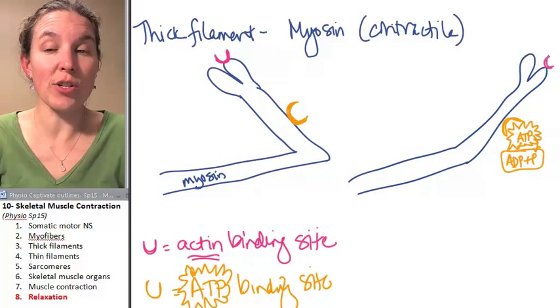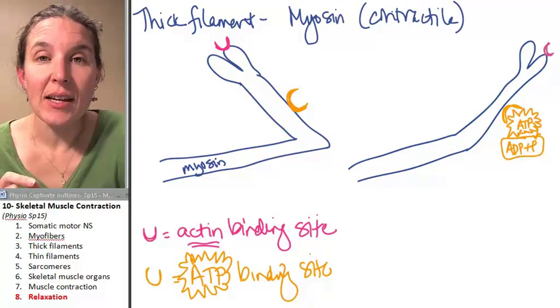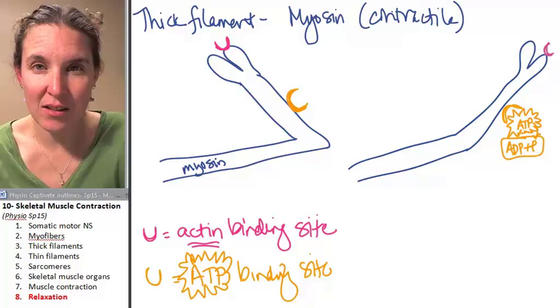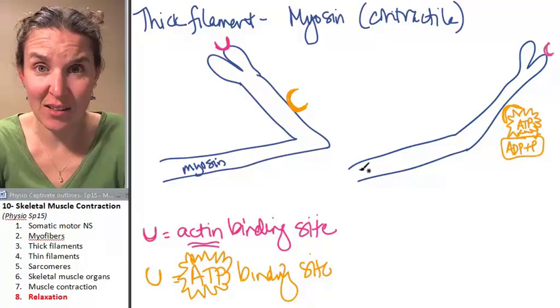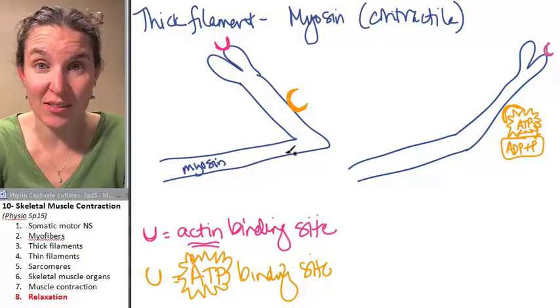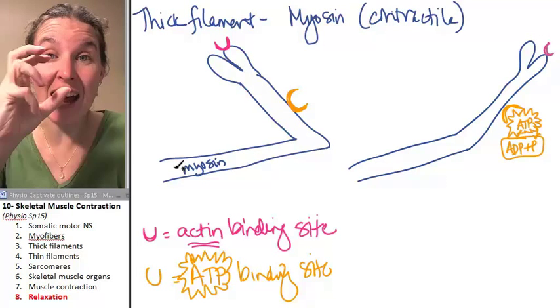Now, this is the counterintuitive part. The weird thing is, in order for a muscle to relax, you actually have to cock your myosin heads. You can't relax if they're in this position because if they're in this position, they're actually attached.